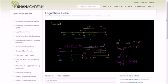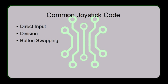If you'd like to learn more about logarithmic scales, I suggest you check out this video from Khan Academy, the link to which you'll find in the description. The most common problem of joystick code is that the robot lacks accurate movement. It moves too fast for subtle movements like retrieving batons or rings, or lining up to score wiffle balls. The most common joystick codes are direct input, division, or button swapping.